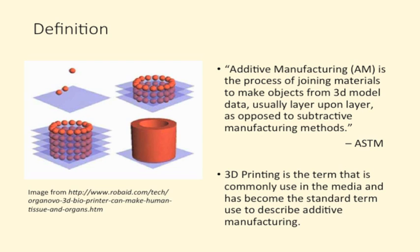Let me first begin by telling you the definition of 3D printing. 3D printing is a commonly used term used by media, but it is also known as additive manufacturing. Additive manufacturing, according to ASTM, is the process of joining materials to make objects from 3D model data, usually layer upon layer, as opposed to subtractive manufacturing methods. From the picture on the left, you can see this definition shown as a picture — the orange material is layered layer by layer until it forms a cylindrical object.